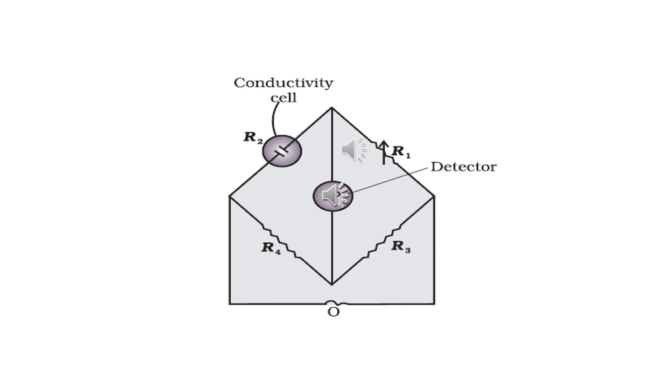Once the cell constant and resistance of the electrolyte in the cell are known, the conductivity of the cell is given by kappa equal to cell constant divided by R. What is the symbol of cell constant? G star. G star by R. The conductivity of the solution depends upon the charge and the ions, size of the ions in which they dissociate, and concentration of ions.